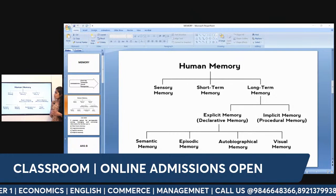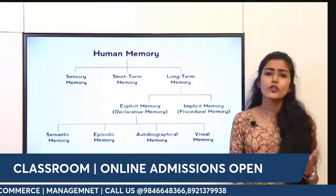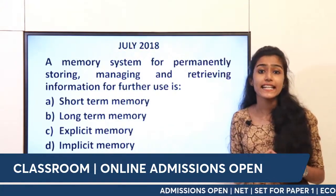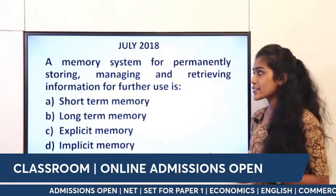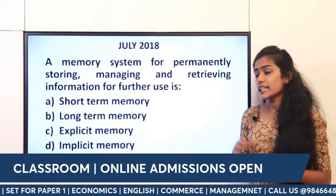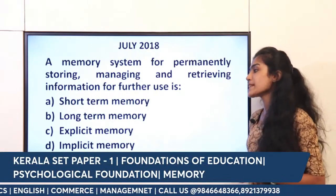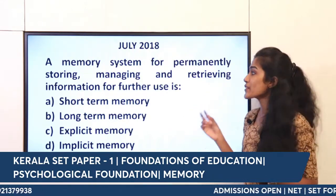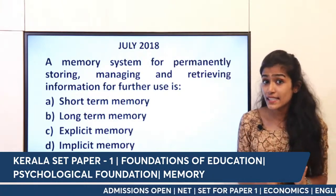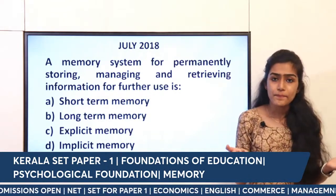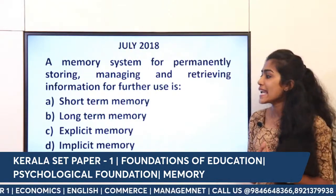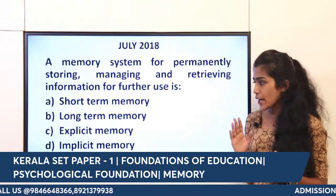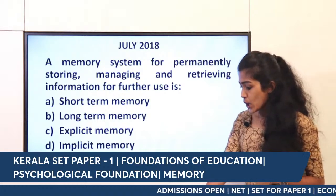We will discuss these types of theories and models, including storing and retrieving information for further use. The options include short-term memory, long-term memory, explicit memory, and implicit memory. The right answer for this question is option B — that is long-term memory, which permanently stores information.